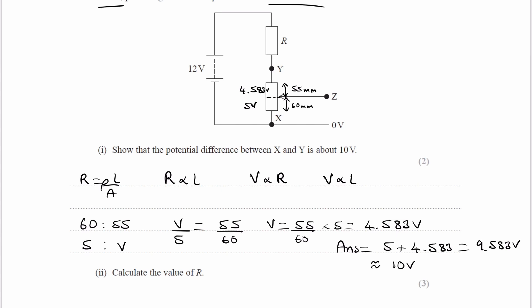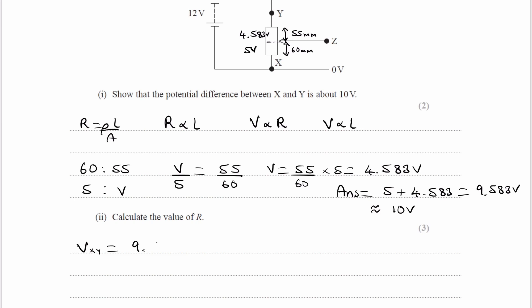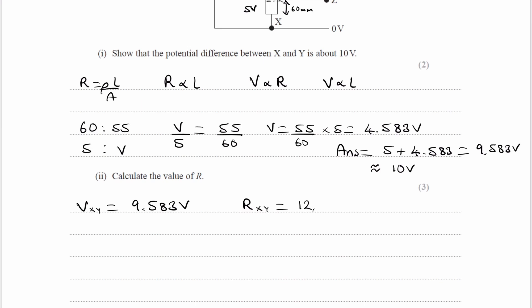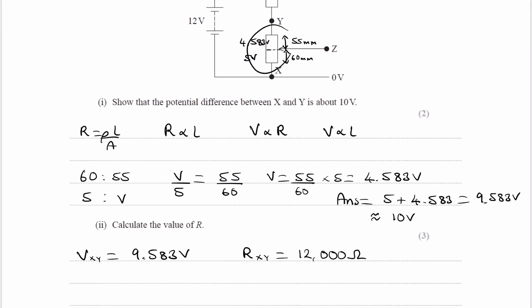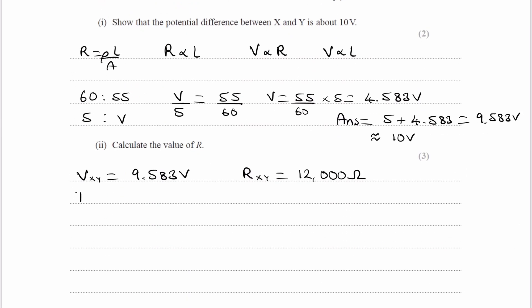The next part wants us to work out the resistance of R. We've now got the voltage across this resistor. We know the voltage across X to Y is 9.583 volts. We know the resistance of X to Y from the previous part, the length of this whole thing. That's the resistor X to Y with a resistance of 12,000 ohms. We can then work out the current in this resistor, and therefore in the whole circuit, because this is a series circuit. Current's the same everywhere. Current is then V_XY over R_XY: 9.583 over 12,000, which gives us 7.986 times 10 to the minus 4 amps.